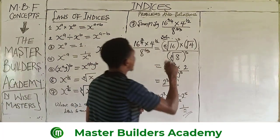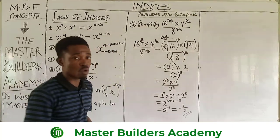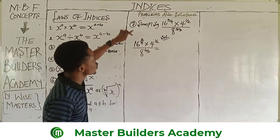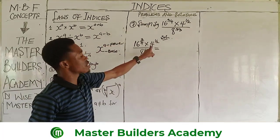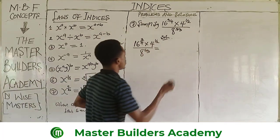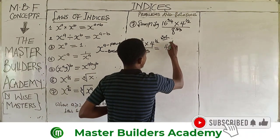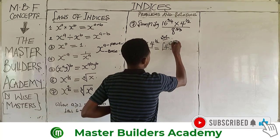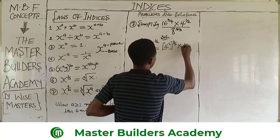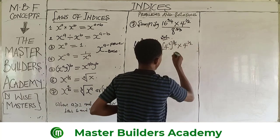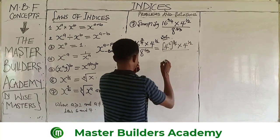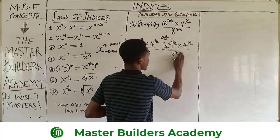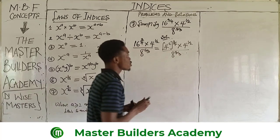Now let's look at another method to solve this particular question. We can decide to reduce everything to base 4. That would give us 4 raised to power 2 times 3 over 4, multiplied by 4 raised to power 1 over 2, all over 8 raised to power 5 over 3.